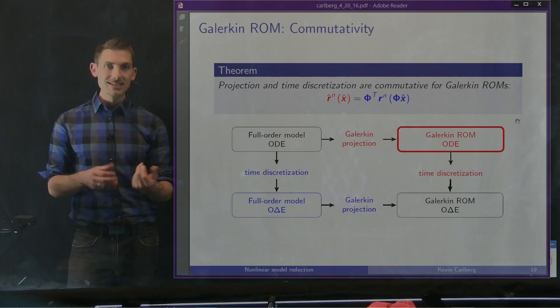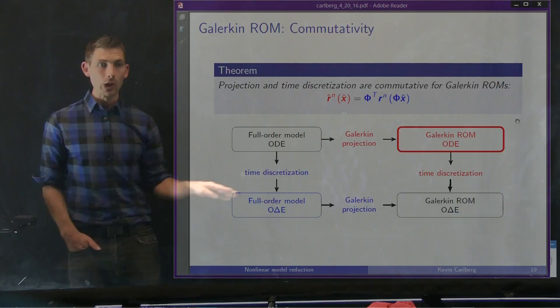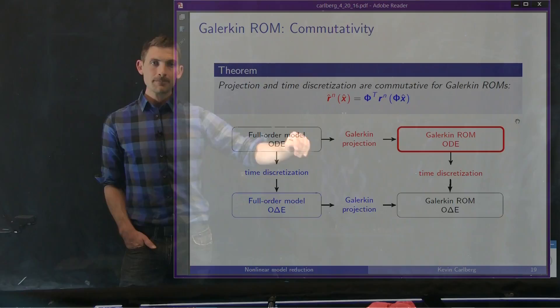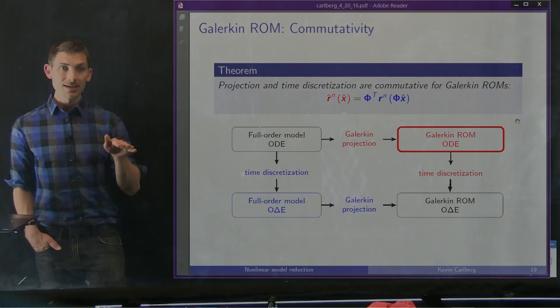An interesting result: Galerkin projection is actually commutative for both linear multistep and Runge-Kutta schemes. Projection and time discretization are commutative for Galerkin ROMs — meaning that if you apply time discretization and then Galerkin projection, enforcing Galerkin orthogonality at the time-discrete level, you get the exact same O(ΔE) as if you had introduced a Galerkin projection first and then applied time discretization. So in your code, you can apply Galerkin at either the time-discrete or time-continuous level and get the same model.